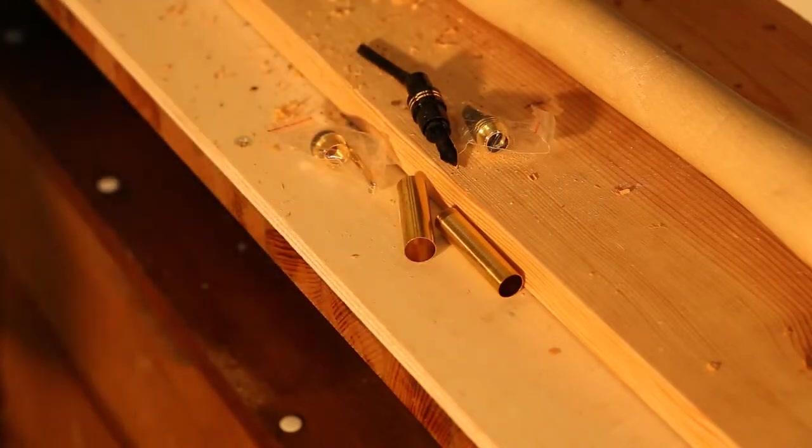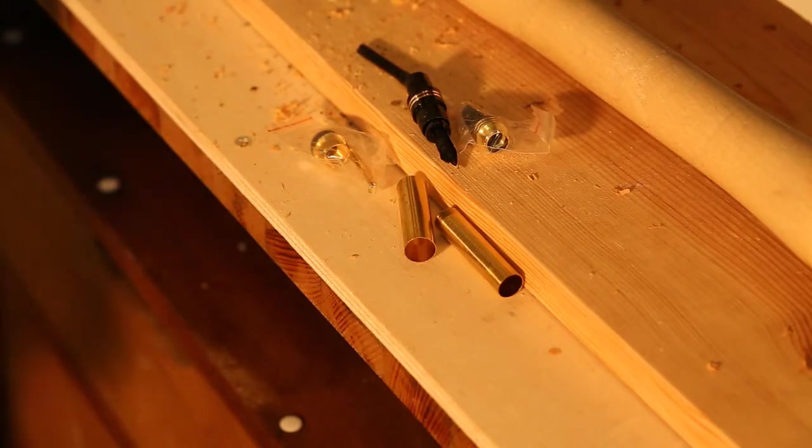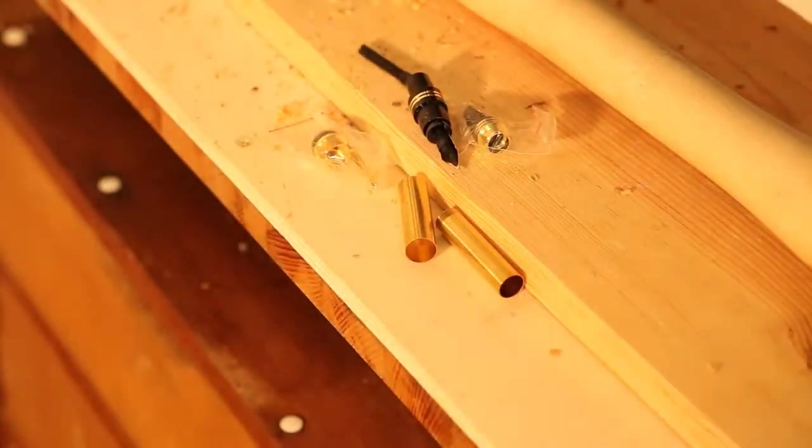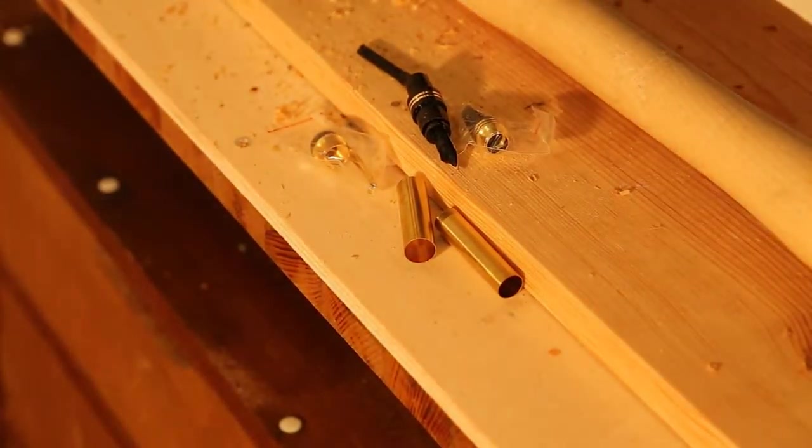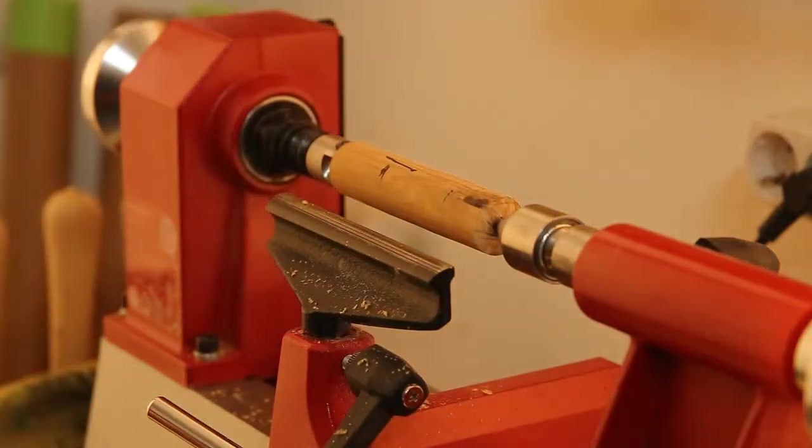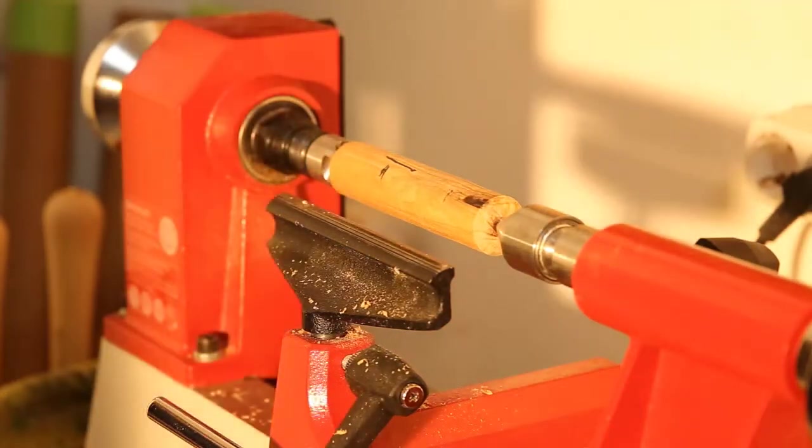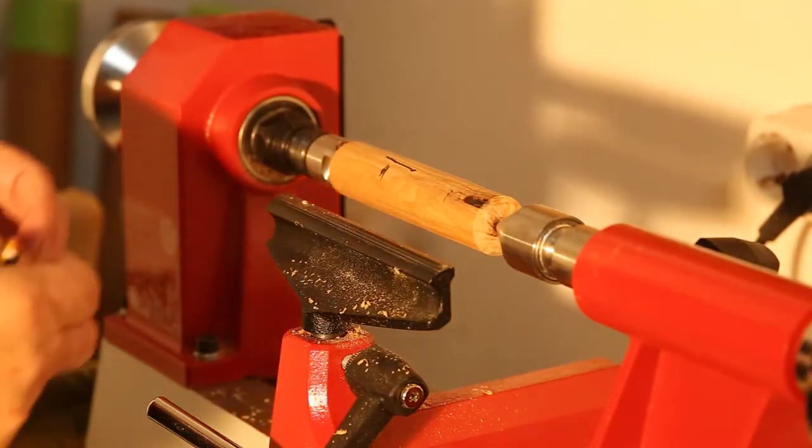But first of all, I'll show you how to mark the wood. The wood is marked using a pen or a pencil. First of all, you need to line up one of the tubes with the wood.